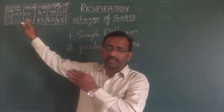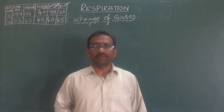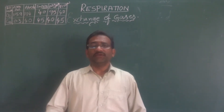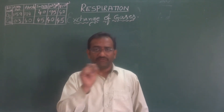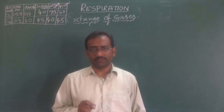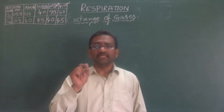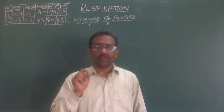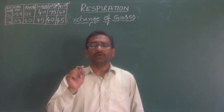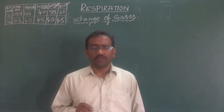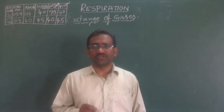The solubility of CO2 is 20 to 25 times greater than that of oxygen. That is why the diffusion of CO2 is much higher than oxygen when diffusing through a diffusion membrane. The diffusion membrane is made up of three layers: a thin squamous epithelial layer of alveoli, a basement membrane, and the endothelium of the alveolar capillary. This is one of the thinnest layers and is used for simple diffusion of gases.